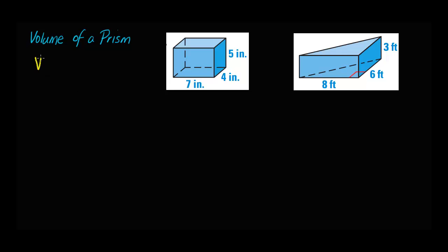Volume for prisms is equal to the area of the base times the height. That's it, that simple. We're going to look for the area of the base. So depending on the kind of prism, this letter B will morph into different equations because it depends on what shape the base is.